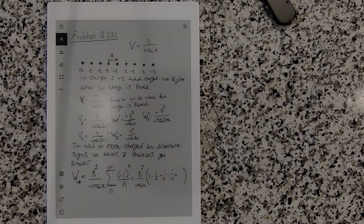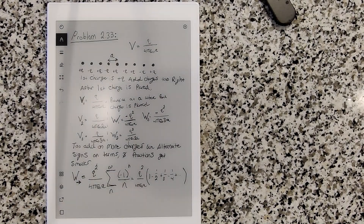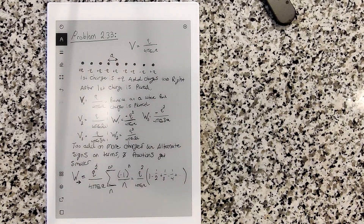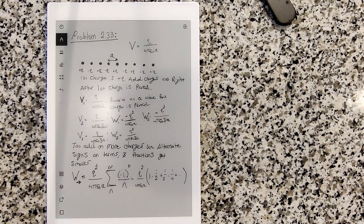Hello everyone, welcome to problem 2.33 of David Griffiths' Electrodynamics. This problem states that we have an infinite line of point charges that alternate sign of plus or minus q, all strung out along the x-axis.